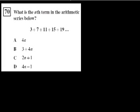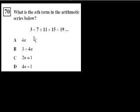We're on problem 70, and they still want us to do some sequences and series. What is the nth term in the arithmetic series below? An arithmetic series increases by a constant amount every term. The first term is 3, and then we increment it by 4 each time.